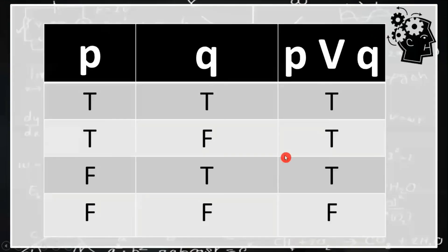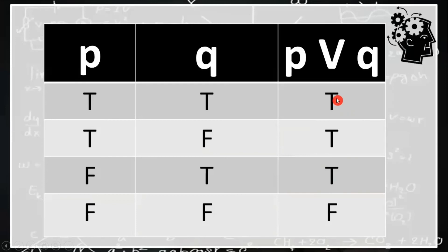This is the truth table for disjunction. The disjunction will only be false when both propositions are false. The rest of the combinations of truth values are true. Meaning, if one of the disjuncts is true, then the disjunction is true. Otherwise, it is false.